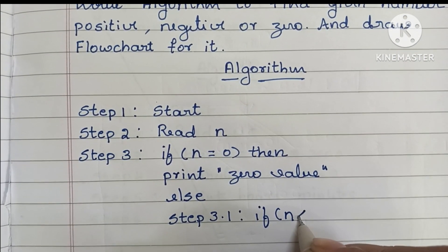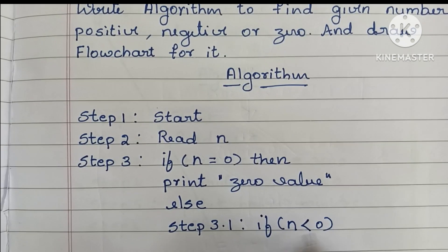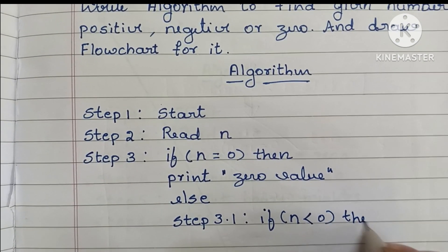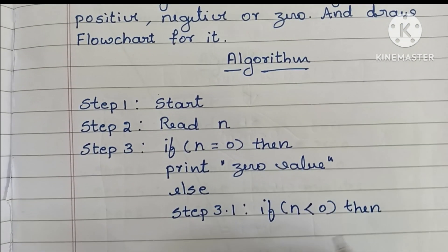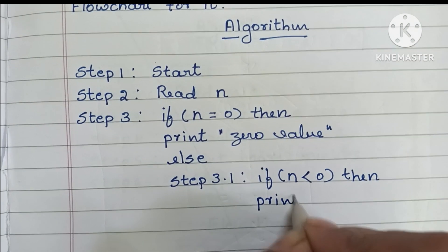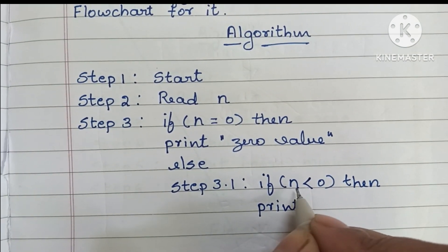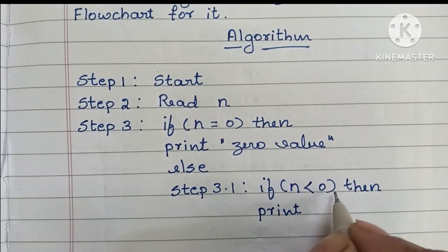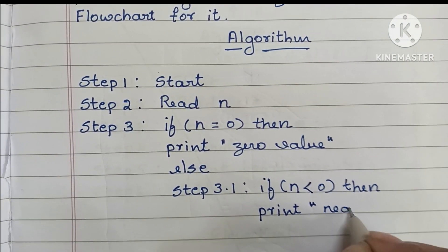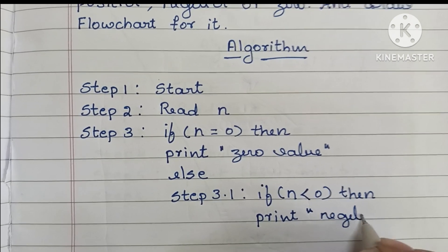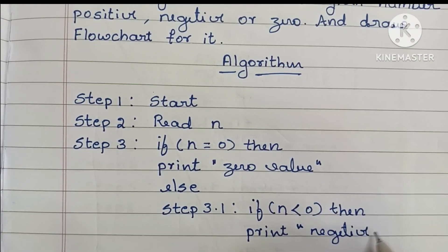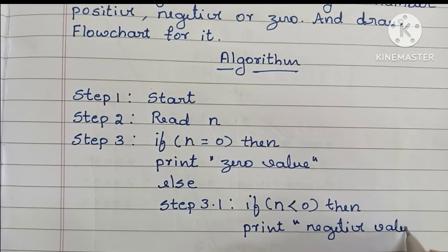In step 3.1: if N value is less than zero and this condition is true, then N is a negative value, so we have to print 'negative'.